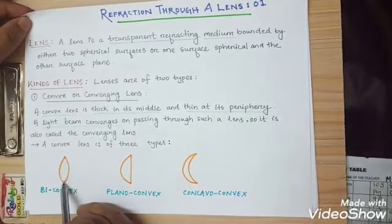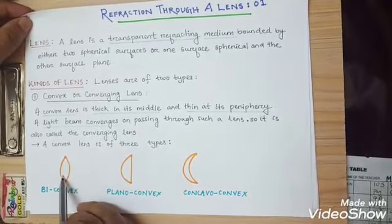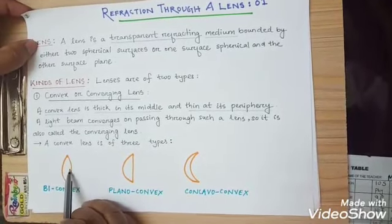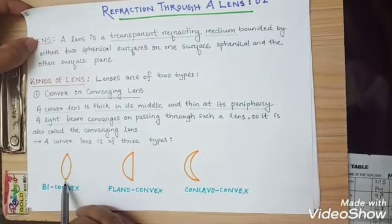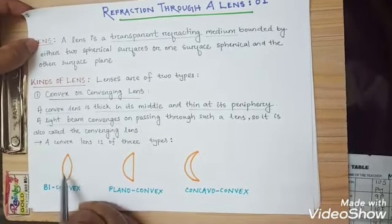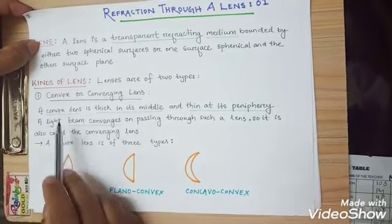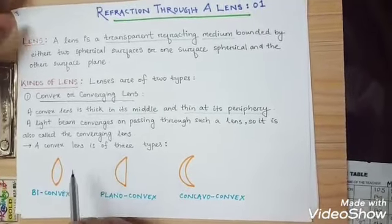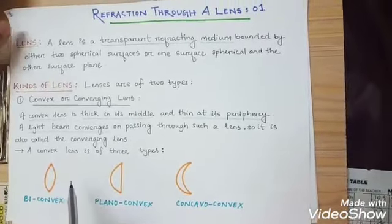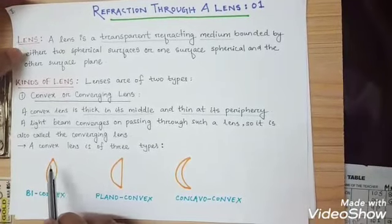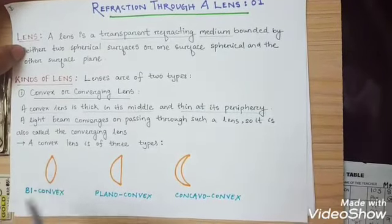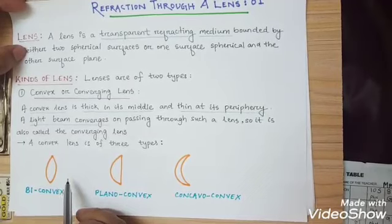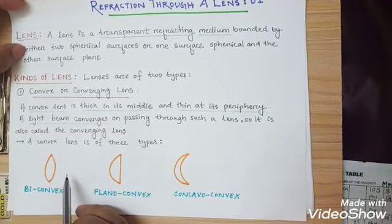The convex lens is thick in the middle and thin at its periphery. Convex lens is otherwise known as converging lens. Why? Because when a ray of light passes through it, it converges the ray.